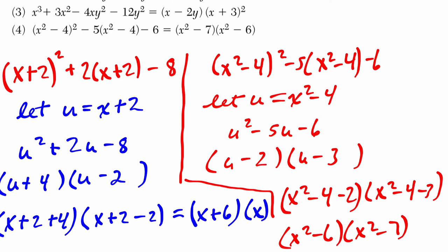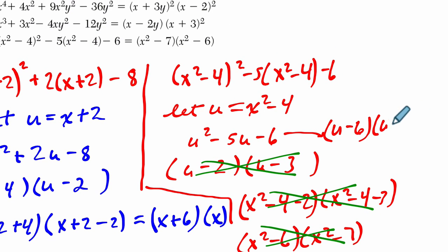So multiply to negative 6, but add to negative 5. So this is interesting. I made the mistake, good job Sean, that they predicted I would make. Instead, that should be what? It should be (u-6)(u+1). Oh boy.